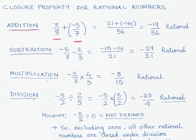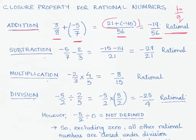The LCM of the denominators is 56 (7 times 8). We multiply 3 times 7 and 8 times minus 5, giving us 21 plus minus 40, which equals minus 19 by 56. This result is in the form of p by q where the denominator q is not equal to 0. So when we add any two rational numbers the result is always a rational number.